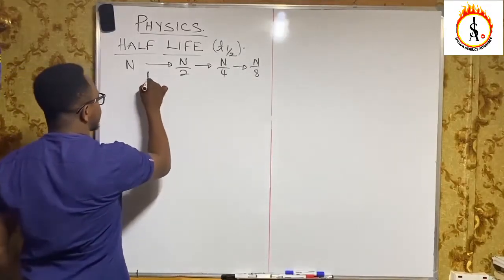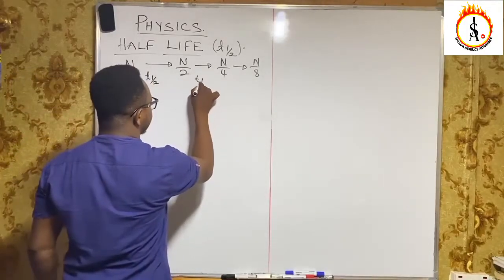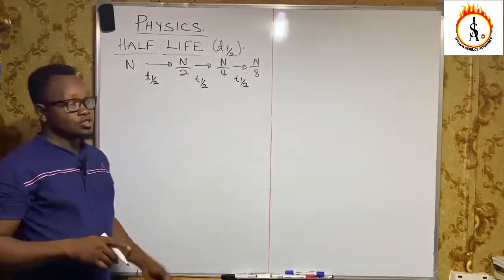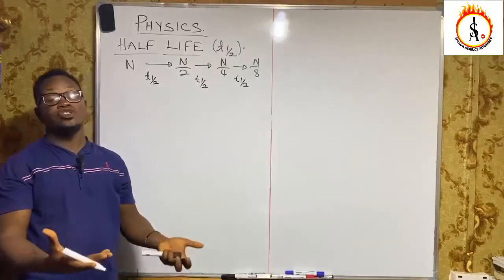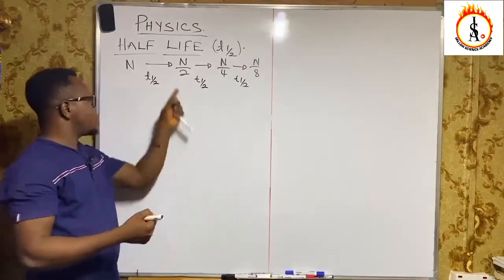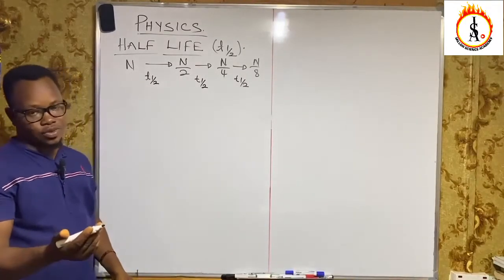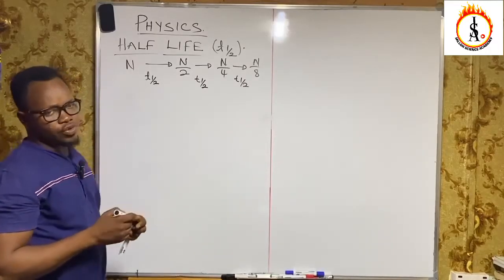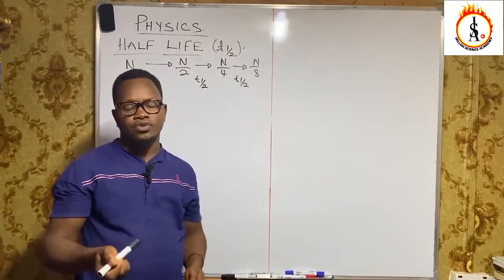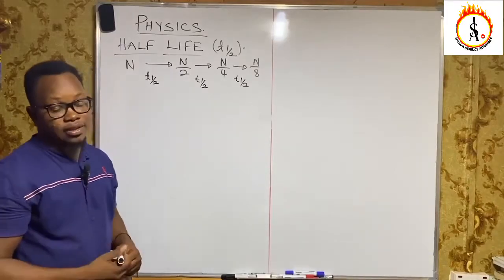So from this quantity to this quantity, the time we call it half-life. From this quantity to this quantity is also half-life. So the time it will take for the original amount of a substance to decay into half its original size — that's what half-life is. For us to get the radioactive equations, we need to consider a particular atom decay, so we're going to consider a decay curve.